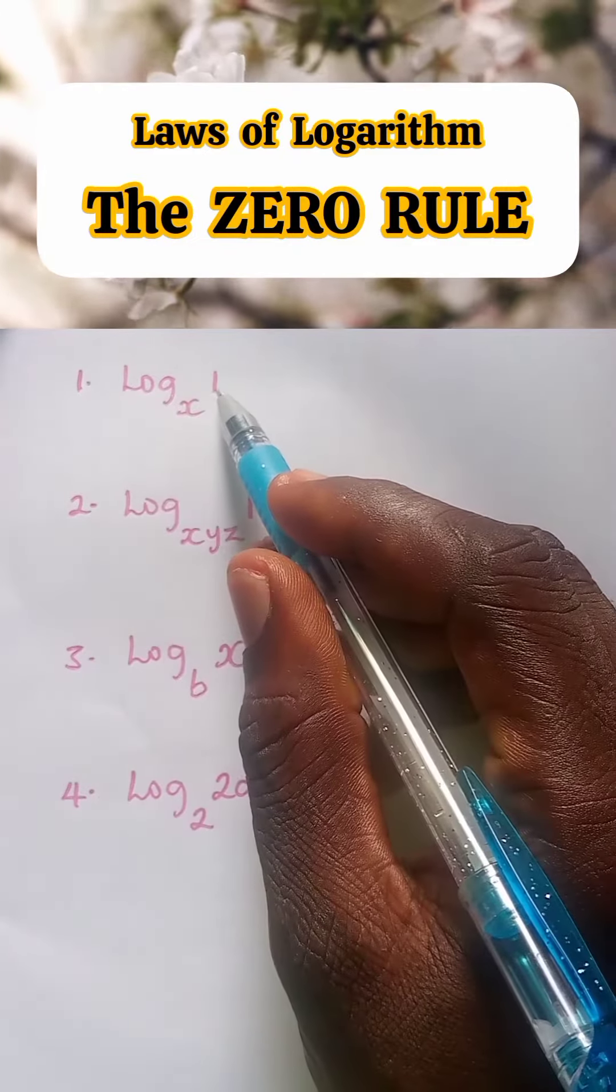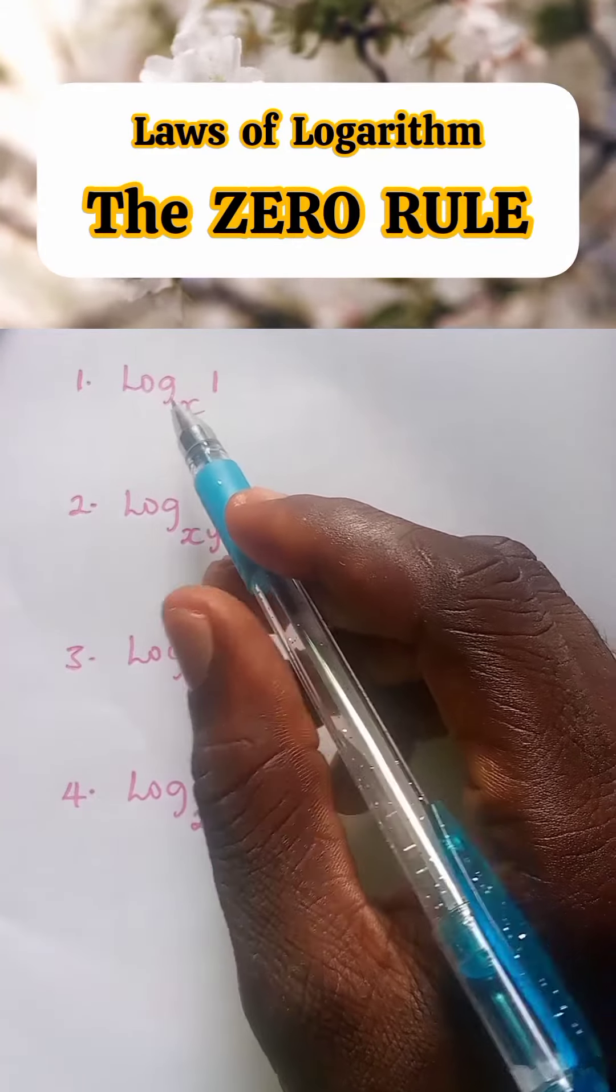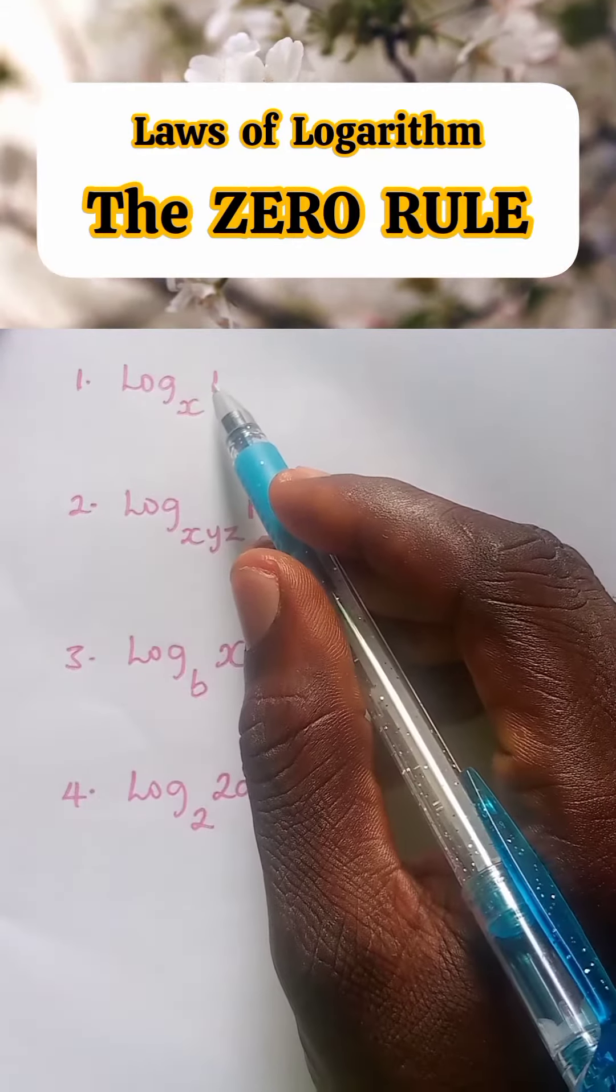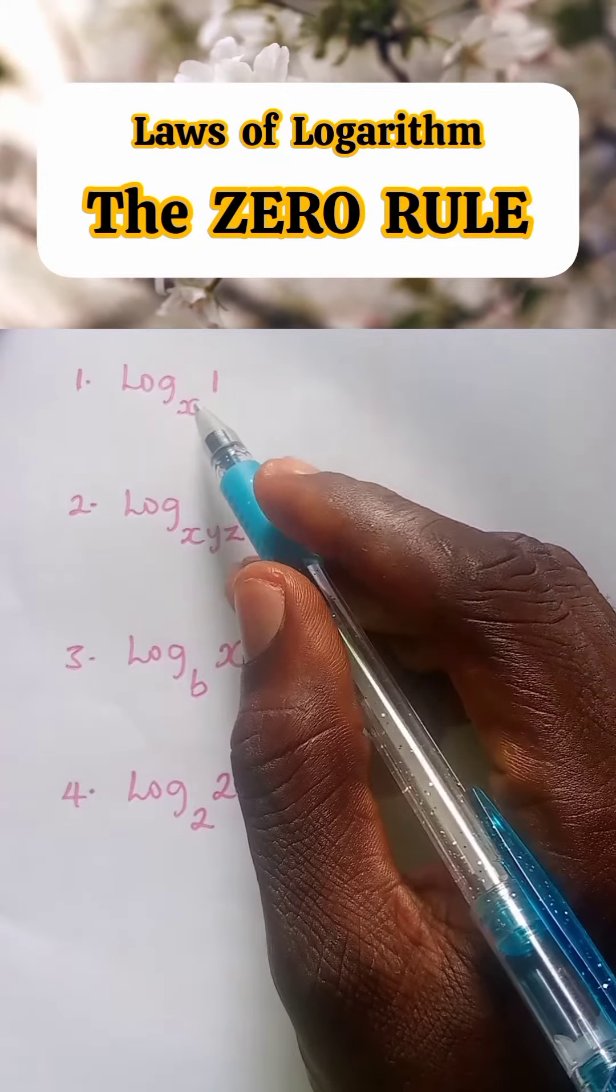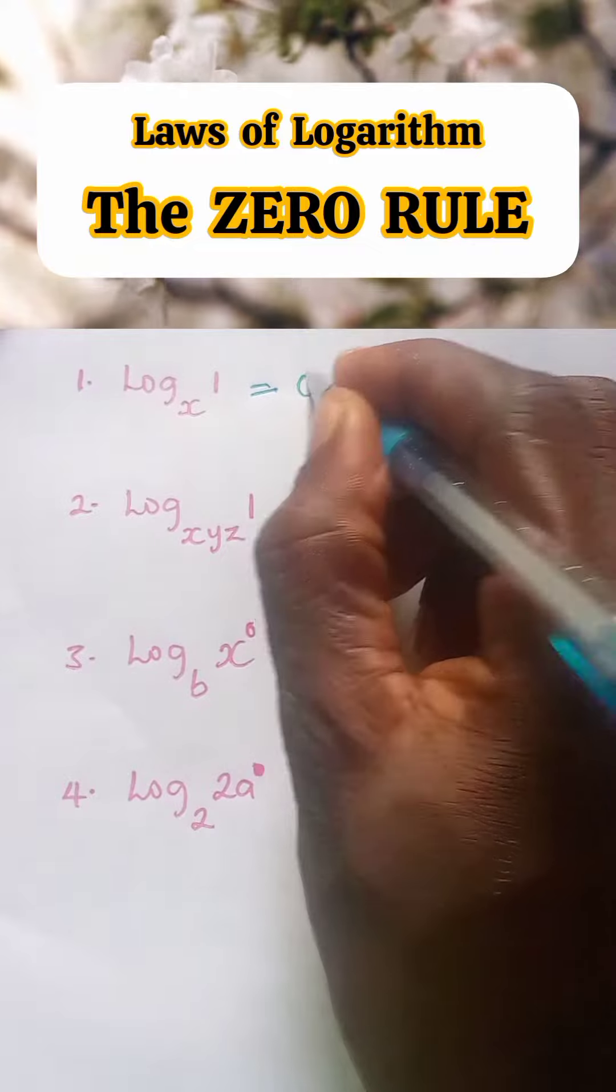Number one, log one to base x. The zero law says the log reading of one to any base is equal to zero. Therefore, log one base x is equal to zero.